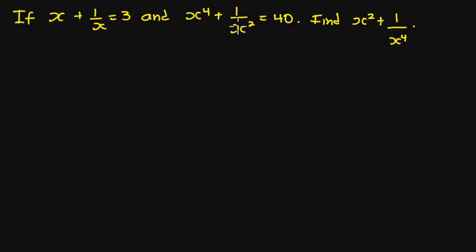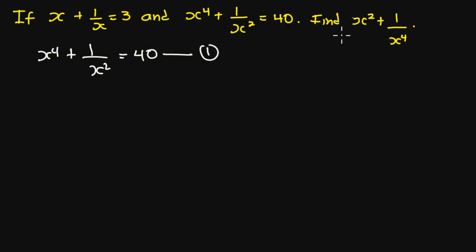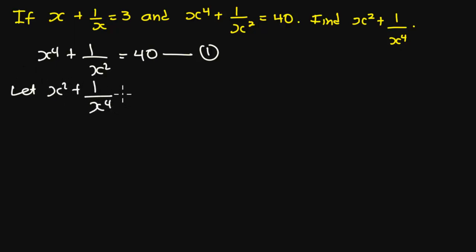I'm going to call this equation 1: s to the power 4 plus 1 over s squared is equal to 40. And then I'm going to let a be equal to the whole of this expression — so I'm going to let s squared plus 1 over s to the power 4 be equal to a. Let me call this equation 2.